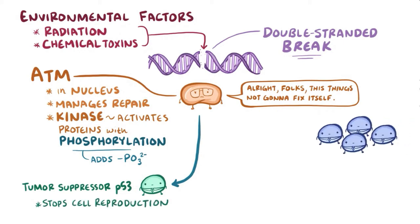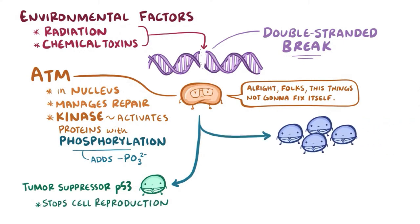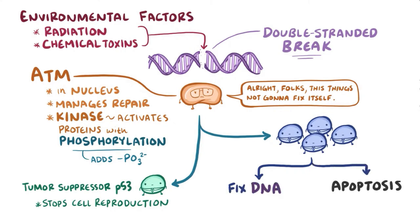ATM also phosphorylates additional proteins which will either fix the DNA or kill the faulty cell through a process of apoptosis, which is controlled cell death. This way we don't end up with a bunch of defective cells trying to reproduce.